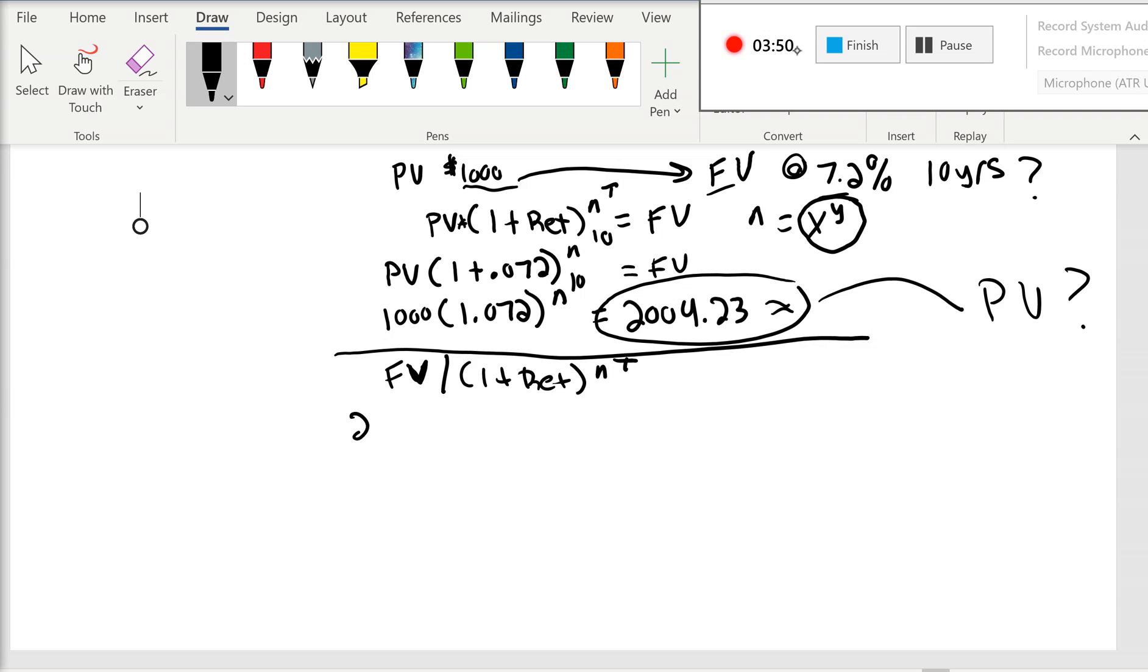So how do we do that? Well, we know we had $2,004.23, and we're going to take that, we're going to divide it by 1.072 to the exponent of 10 years. And remember, this thing here, where we do this, that is the X to the Y button on your simple calculator or your iPhone.